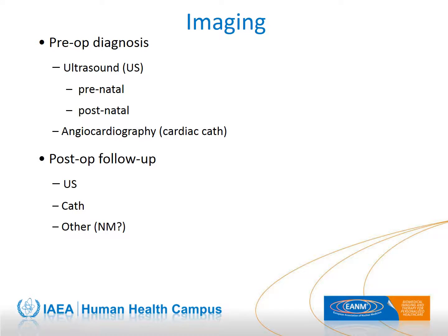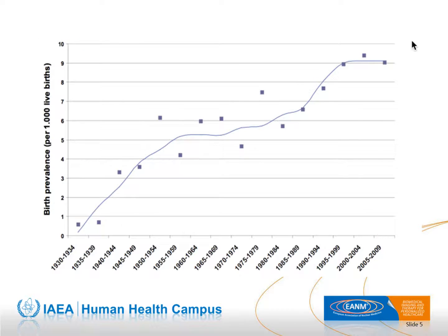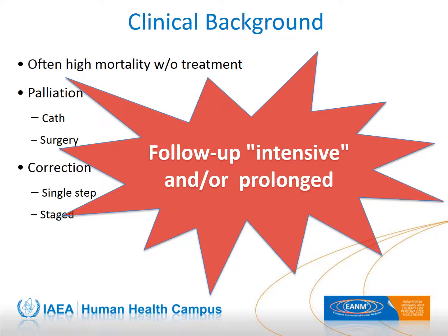Diagnosis and treatment plans are based first and foremost on accurate morphological definition of the anatomical disposition. It is usually obtained by a combination of ultrasound, magnetic resonance, and angiography. The same techniques also play a major role during follow-ups, which require in many cases lifelong monitoring. This is particularly significant considering the rising prevalence of congenital heart defects and the increasing survival after treatment.